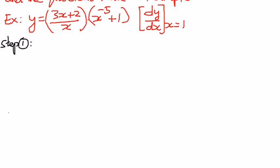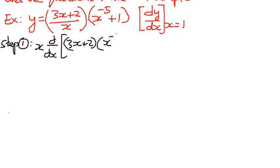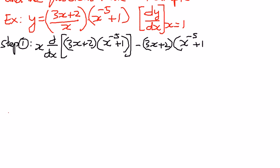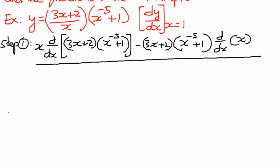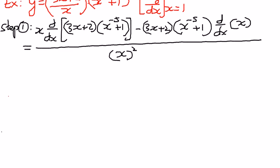The denominator, which is x, times d/dx of the numerator (3x + 2)(x to the power of negative 5 plus 1), minus (3x + 2)(x)(x to the power of negative 5 plus 1) times d/dx of x — this whole thing divided by x squared. That is how we are going to start to find the derivative.